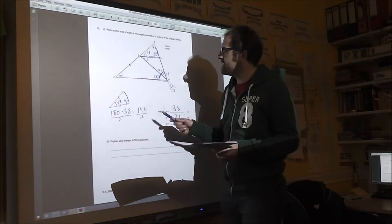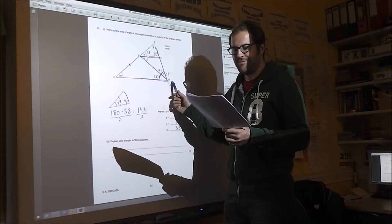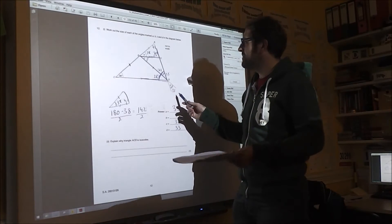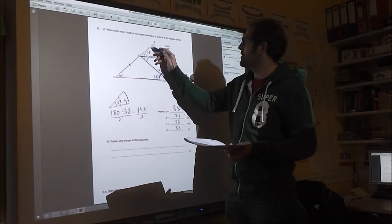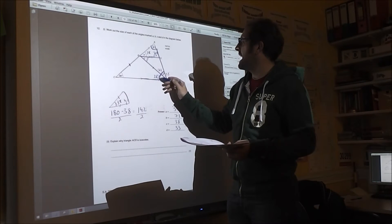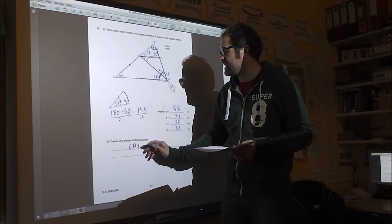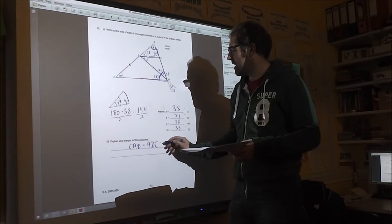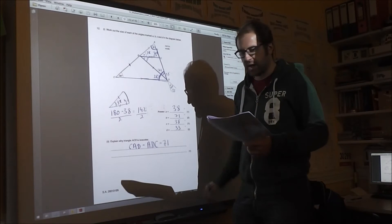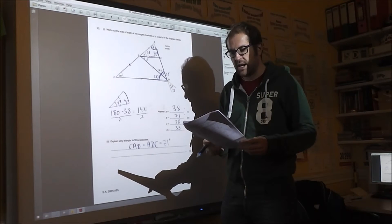Explain why triangle ACD is isosceles. An isosceles triangle has two angles the same. The two angles which are the same are this one and this one. So you could say angle CAD is the same as ADC, which are both 71 degrees. And that would satisfy it.